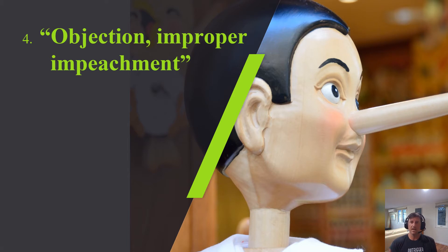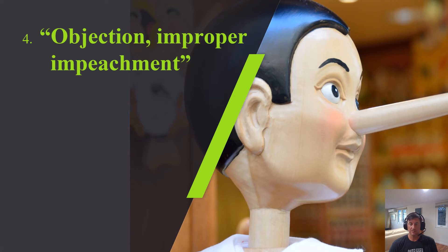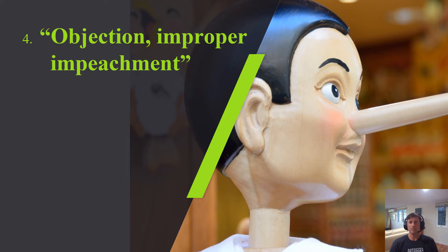Objection improper impeachment is a difficult one to get your head around because it's a differently framed objection. One of the things we do especially on cross-examination is we try to impeach — meaning we're trying to ask questions or get into testimony designed to impact the credibility of the witness. We're trying to signal to the jury or evaluators at mock trial that they shouldn't believe what this witness has to say.